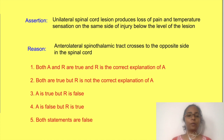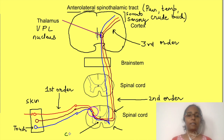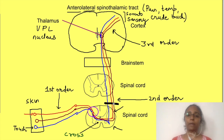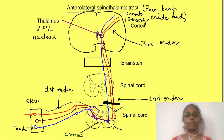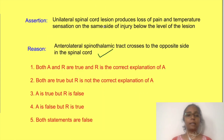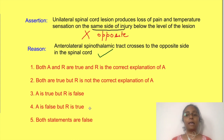Now let us return to the original question. The reason statement is correct: the second order neuron of the anterolateral pathway crosses in the spinal cord. If there is injury to the spinal cord — say on the right side — the already-crossed fibers from the left side are travelling on the right side. Tracing the pathway, you will understand that pain and temperature sensation from the opposite side of the body are affected, specifically from regions below the lesion.